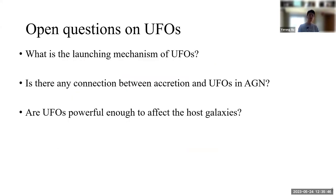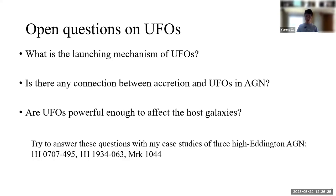Although in the past two decades people have detected UFOs in many AGN, there are still a lot of puzzles. Here are the three open questions I would like to discuss today: first, what is the launching mechanism of UFOs? Second, is there any connection between accretion and UFO in AGN? And last, are UFOs powerful enough to affect the host galaxies? Today I would like to try to answer these questions, or at least contribute part of the answer, with case studies from my work on three highly accreting AGN: 1H0707, 1H1934, and Markarian 1044.